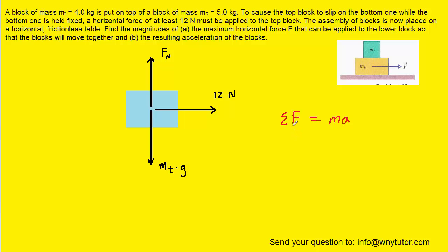Now, according to Newton's second law, the sum of the forces is equal to mass times acceleration. We can see in the horizontal direction that the sum of the forces would just be the 12 Newtons. The mass of the top block was given to us as 4 kilograms. And so we can actually easily solve for the acceleration of the top block just by dividing both sides of this equation by 4.